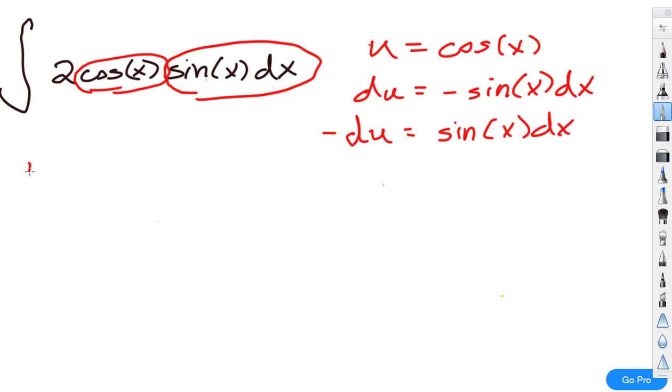So now what happens is that this becomes, what can I do with this 2? I can just move it out in front because I'm multiplying by a constant. So 2 times the integral, cosine becomes u, and then sine of x dx, well, that becomes negative du.